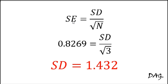Standard error is equal to standard deviation divided by the square root of the number of replicates. In our case we have three replicates. From our analysis, the standard error of the IC50 value was 0.8269 and the number of replicates was three. Putting that into the equation, we can make standard deviation the subject and obtain the standard deviation of our IC50 value.